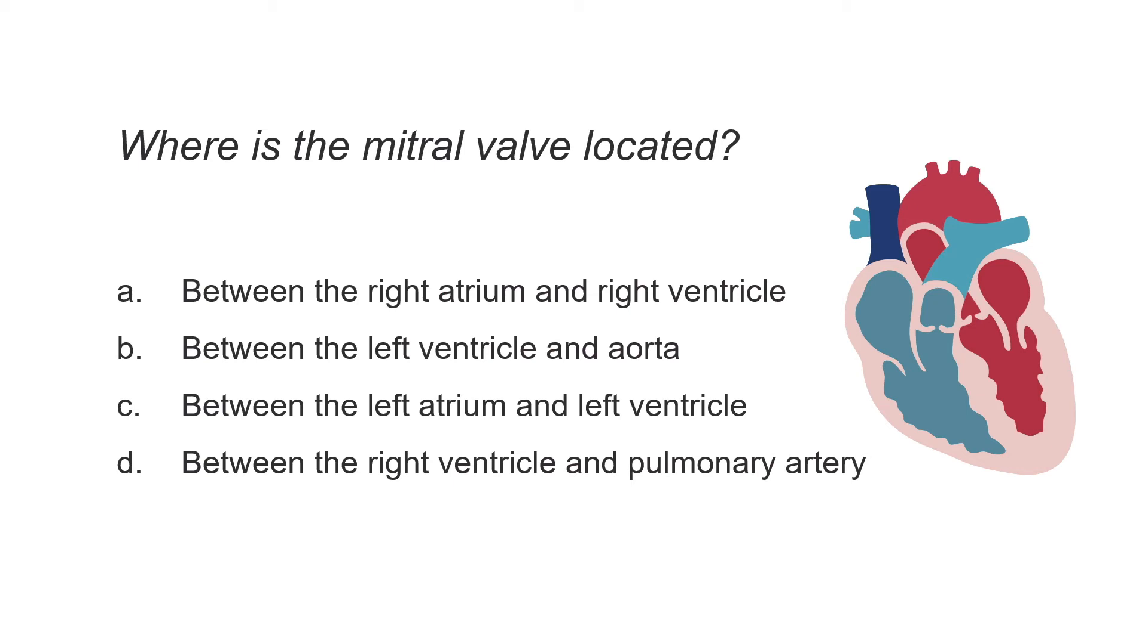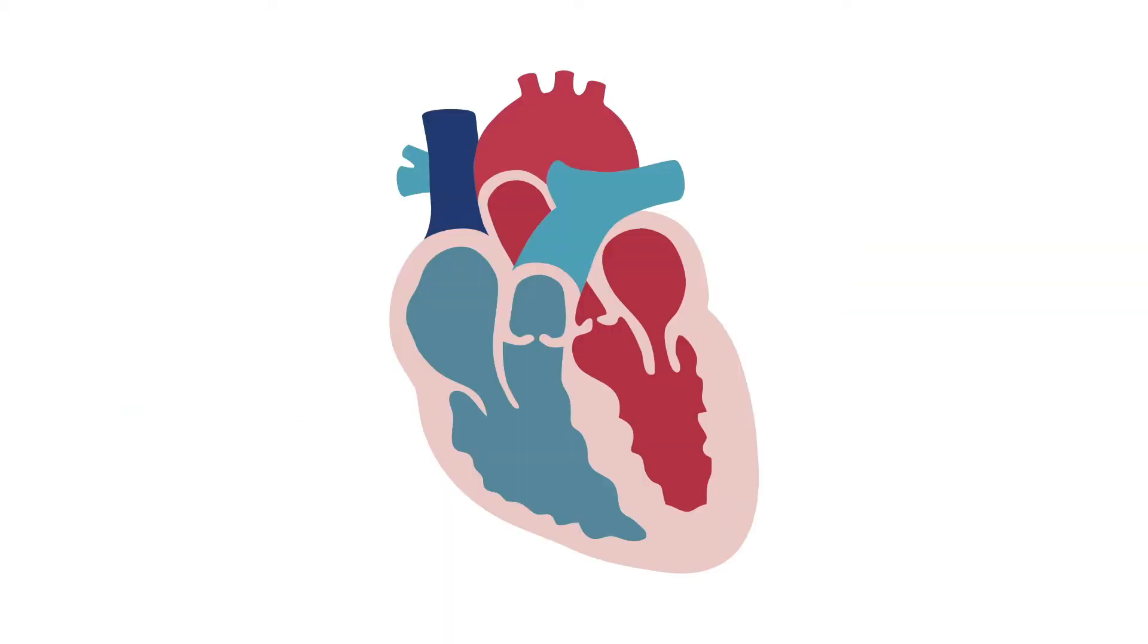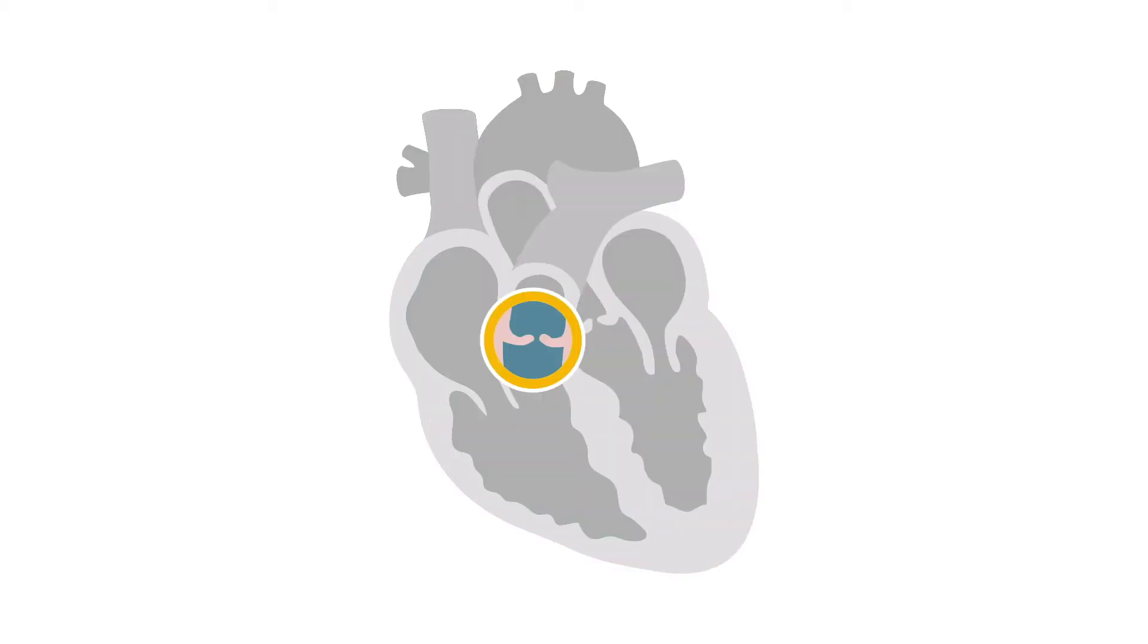You may be thinking that even in this case, if the student knows the locations of the other valves, they could still narrow down the answer without actually knowing the location of the mitral valve, which is certainly true. But in that scenario, at least you have forced the learner to recall the names and positions of the tricuspid, pulmonary, and aortic valves in order to answer this question, which is likely just as valuable as retrieving information about the mitral valve itself.